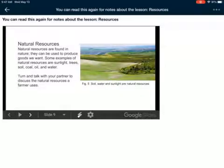Natural resources. Natural resources are found in nature. They can be used to produce goods we want. Some examples of natural resources are sunlight, trees, soil, coal, oil, and water.